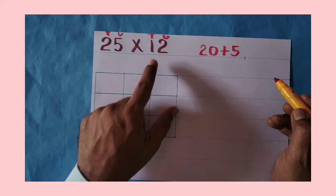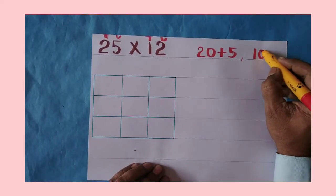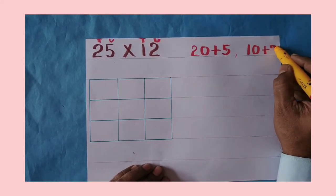Twenty-five means twenty plus five. Then, twelve means what? Twelve means one-ten plus two units.